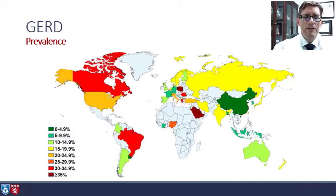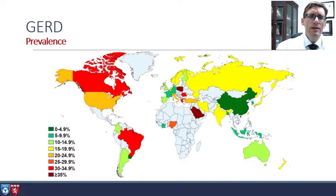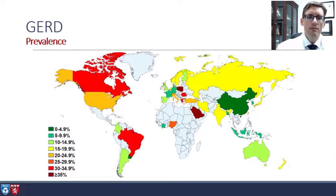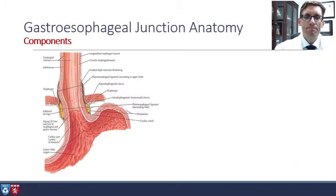GERD is a very prevalent condition. The nations in red and orange have a 25 to 34 percent prevalence of the condition, and yellow is 15 to nearly 20 percent. It's a little less common in Asia, but still a very problematic condition.